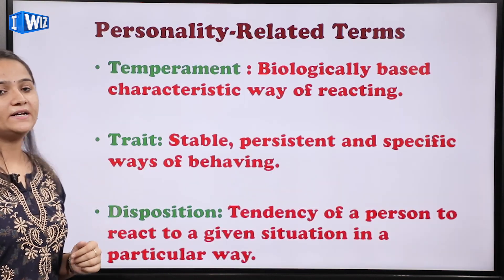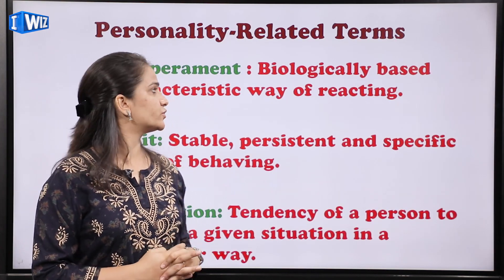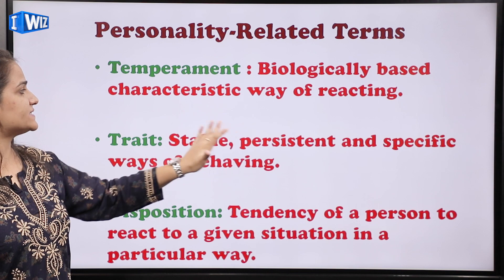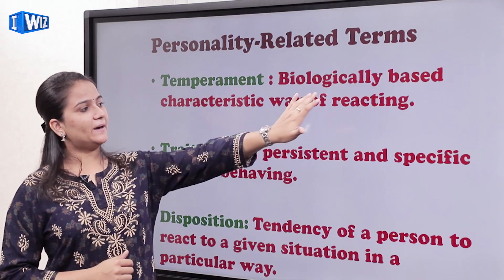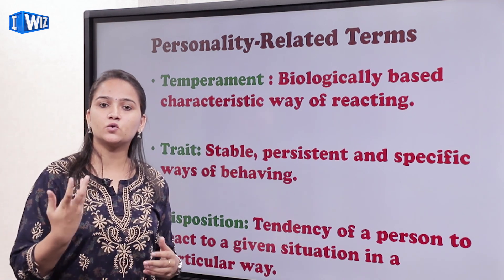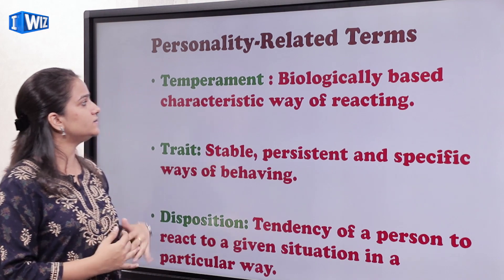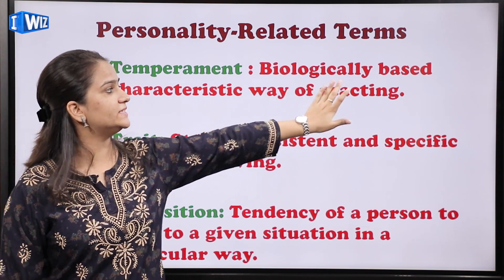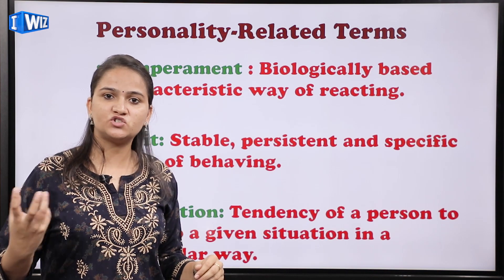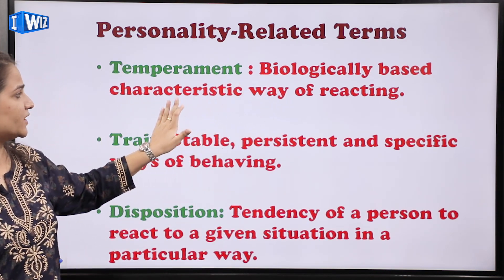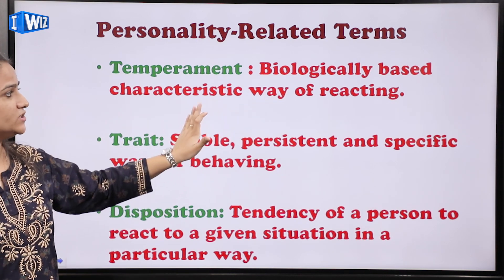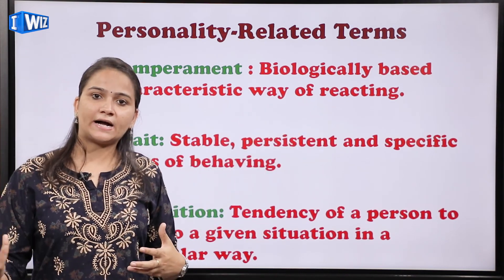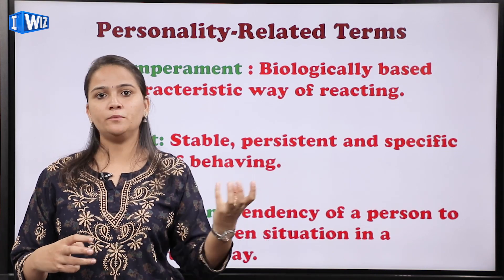There are a few very important personality-related terms we should look at। The first is temperament — a biologically based characteristic way of reacting। यानि वो तरीके जो आपको biologically मिले हैं। जैसे किसी का गुस्सा बहुत high होता है — we say इस इनसान का temperament is high। It is not because of the environment — it is because आपका जो temper है, that is biologically based, determined by your genes। ऐसी चीज़ को हम temperament बोलते हैं।